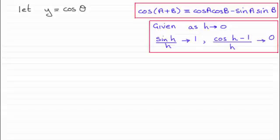Hi there. Now in this video what I want to do is show you how you can differentiate from first principles y equals cosine theta and get the result that dy by d theta is equal to minus sine theta.